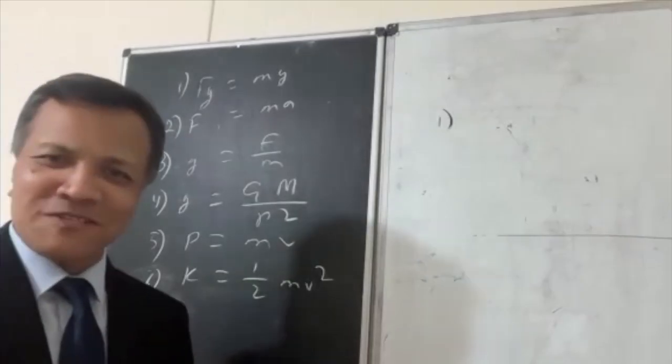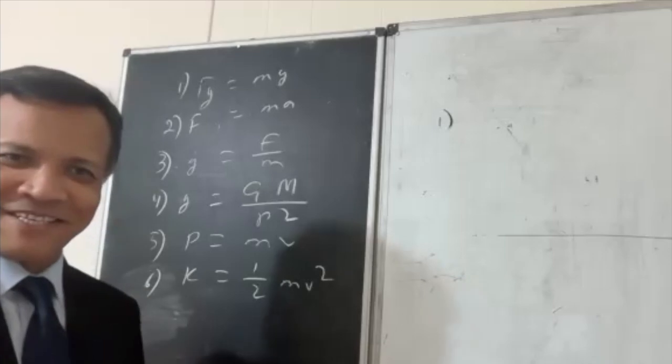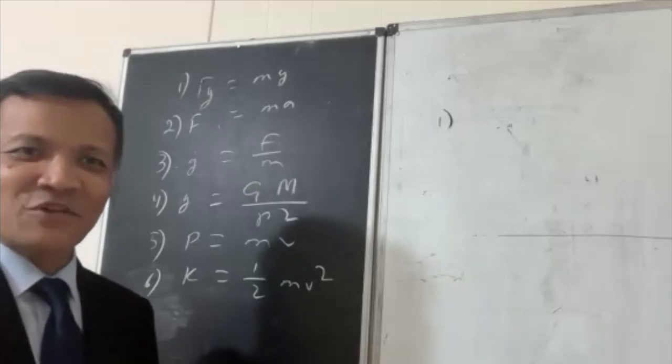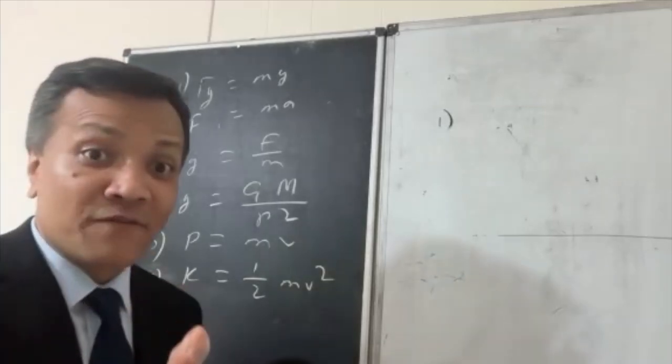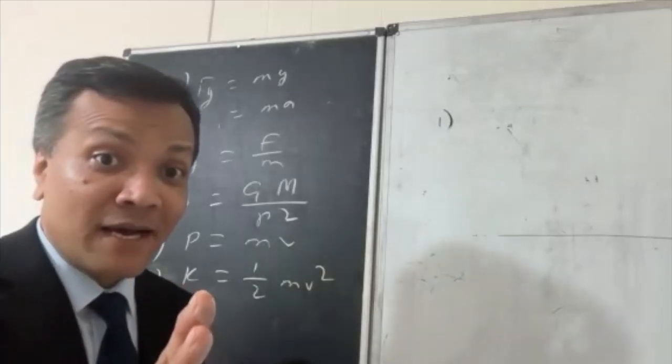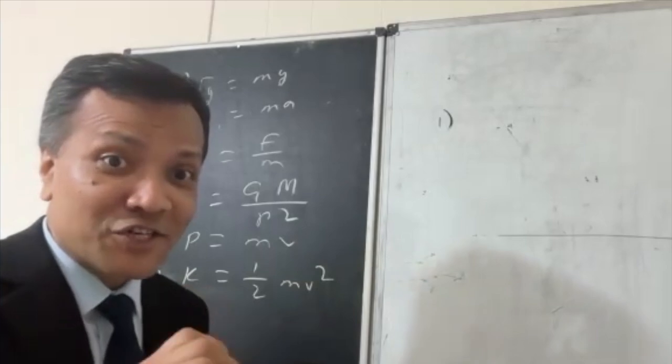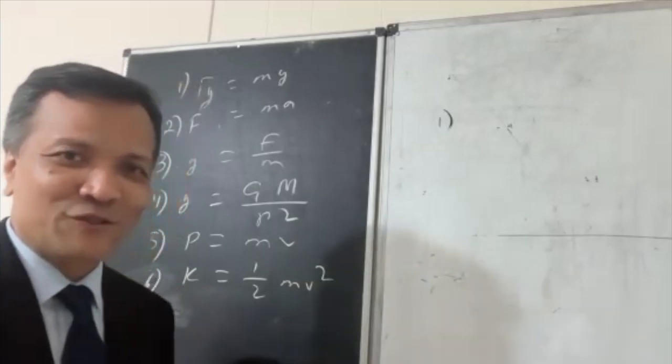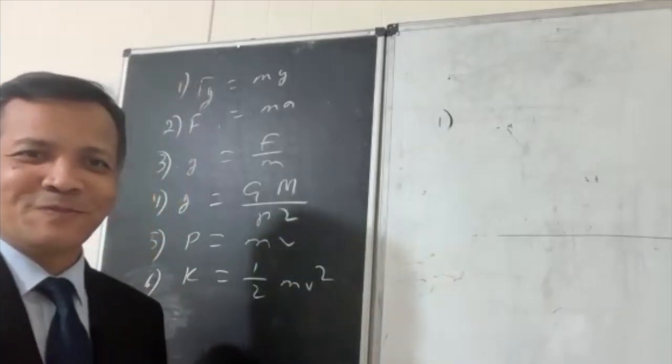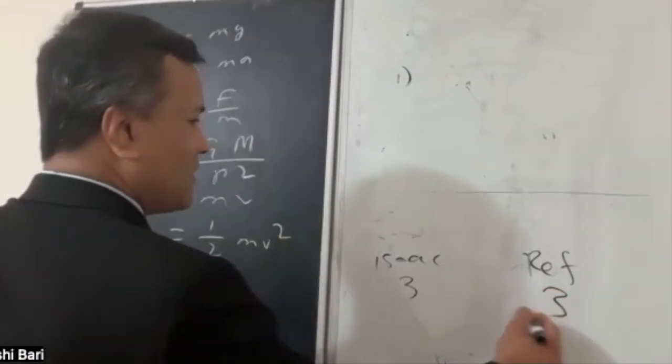How many equations did I write? Six. But how many of them are an example of inertial mass? I'm going to give it three, two, five, and six. Isaac said three. And Ref? Well, I have to see the equations. I think it's also three.